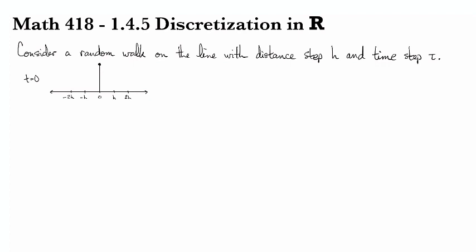First, consider a random walk on the line that has distance step h and time step τ. We're going to start with a point mass at zero, and then at any time step it can move either to the right or to the left randomly, with equal probability. There's a likelihood of one half that it goes either direction.